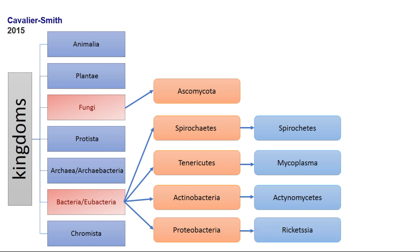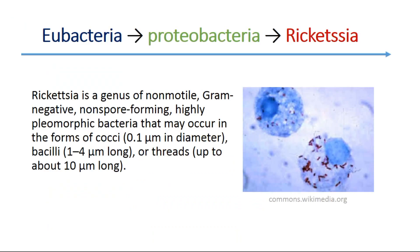In this lecture, I will talk about the kingdoms bacteria and fungi. Types of fungi from phylum Ascomycota, spirochetes from Spirochaetes, mycoplasma from Tenericutes, actinomycetes from Actinobacteria, and rickettsia from Proteobacteria. On this slide you can see rickettsia — a genus of non-motile, gram-negative, non-spore-forming, highly pleomorphic bacteria that may occur in the forms of coccobacilli or threads.